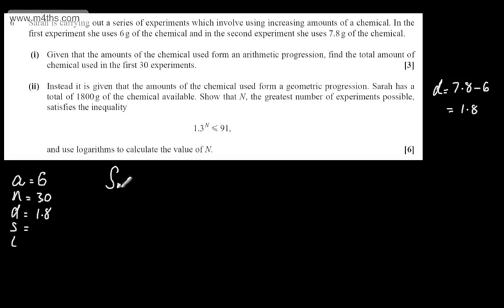We can say, in general, the sum of N terms of an arithmetic progression is N over 2, 2A, where A is the first term, plus N minus 1 multiplied by the common difference. So, we'll have the sum of the first 30 terms, will be 30 over 2.